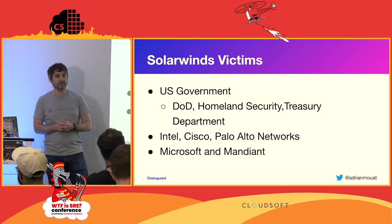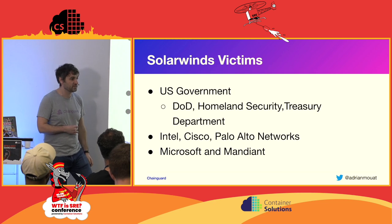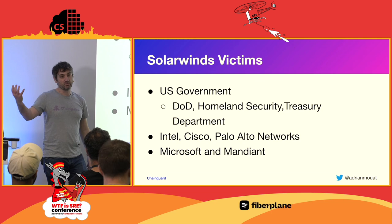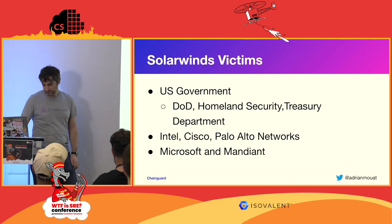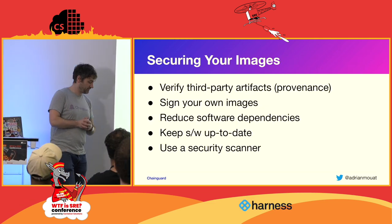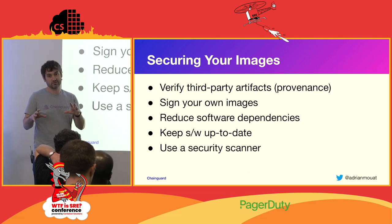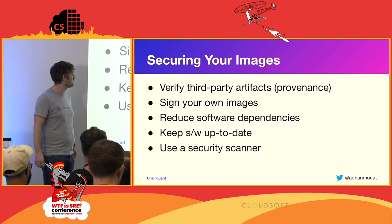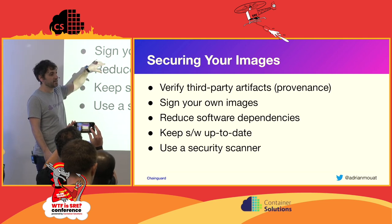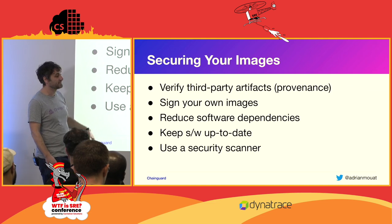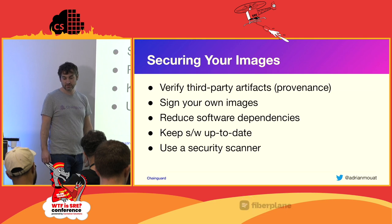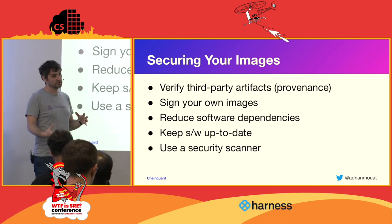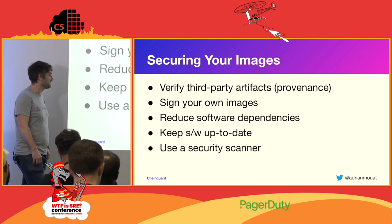I can't really tell you how to prevent an attack as sophisticated as SolarWinds. The main discovery came when somebody eventually noticed a network request to an unexpected domain. But the main takeaway from this talk is that I can give you some advice on simple low-hanging fruit to improve your supply chain security and make sure the images you're building are secure. The main things I'm going to talk about are: verifying third-party artifacts — which we sometimes call provenance — signing your own images using Sigstore, reducing your software dependencies so you have a lower attack surface, and keeping software up to date.